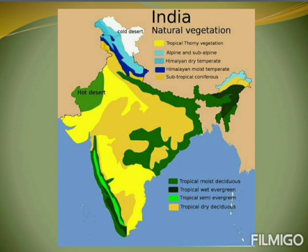Now coming to the map, it is the India map of natural vegetation with different vegetational ranges. You can refer to the areas where different types of vegetation can be seen in India. Thank you.